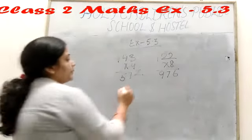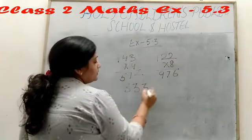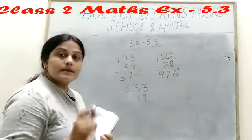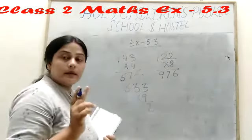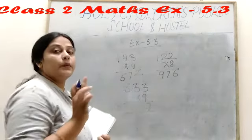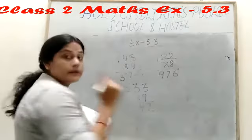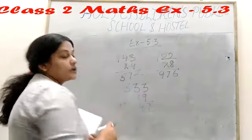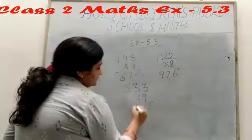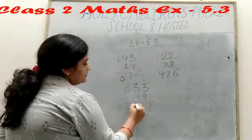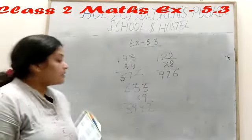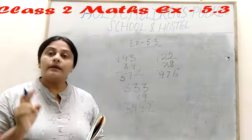Next question is 333 into 9. 9 3 is 27. We can write here 7, 2 carry. Again, 9 3 is 27. 27 plus carry 2 is equal to 29. We can write here 9. Again, 2 carry. 9 3 is 27. 27 plus 2 is equal to 29. When we multiply 333 into 9, our result we get 2997.